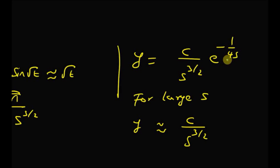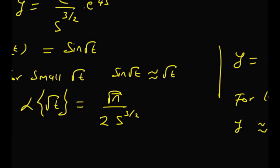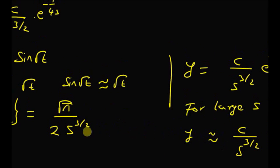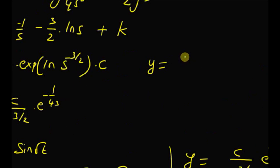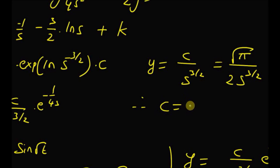For very small values of √t and large values of s, we can equate the two Laplace transforms. That is, c/s^(3/2) = √π / (2s^(3/2)), so the value of the constant c equals √π / 2.